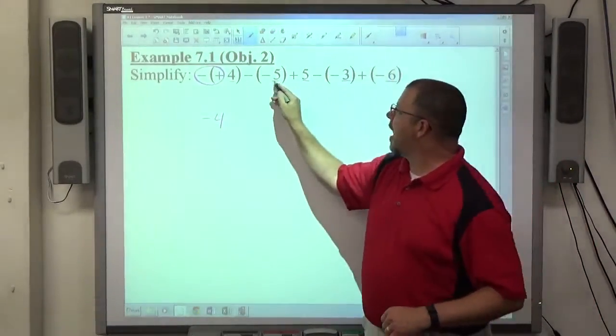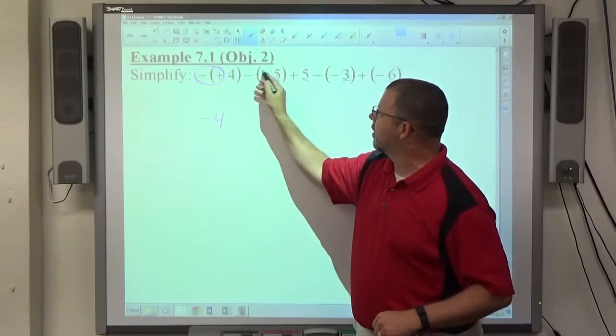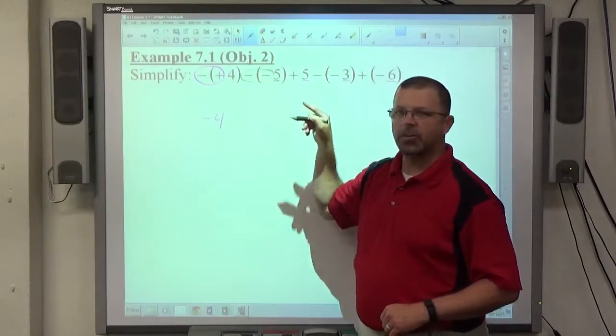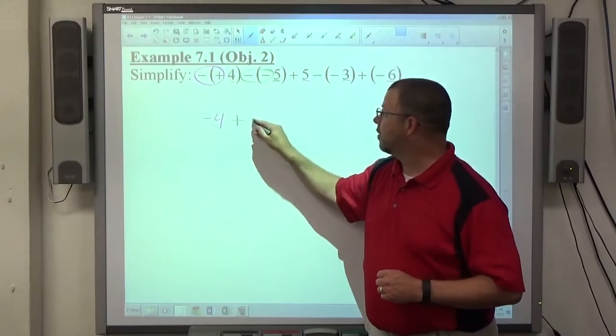Then we look in front of the 5 here, up to the 4. So in front of the 5, there's 2 minuses, which is even. Which makes a plus 5.